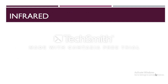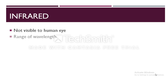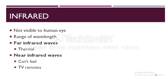Infrared is the frequency of light that is not visible to the human eye. It has a range of wavelengths, just like visible light has a wavelength from red light to violet light. Far infrared waves are thermal — this is the reason we feel heat from sunlight, a fire, or a radiator. Shorter, near infrared waves are not hot at all; in fact, we can't even feel them. These shorter waves are the ones used by your TV remotes.